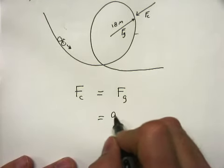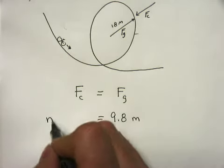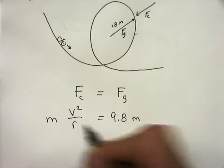And remember to find how much you weigh, it's just 9.8 times your mass, m. And the centripetal force is mv squared over r.